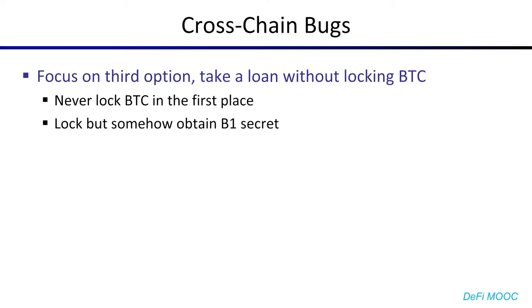To do that, there are really two options. The first is to never actually lock any Bitcoin in the first place. The second is to lock Bitcoin, but somehow obtain the B1 secret so we can immediately unlock it.